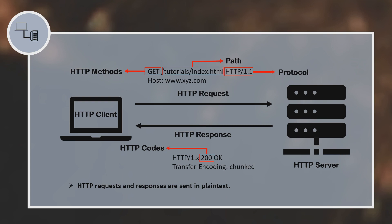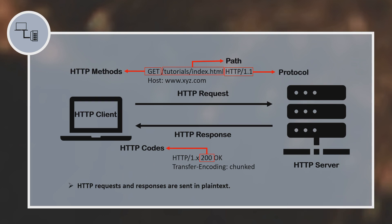The HTTP client sends a request to the server. The server processes it and sends back an HTTP response to the client. In the HTTP response, the server puts a status code, known as HTTP codes. It basically indicates the status of the request initiated by the client, which we will discuss in detail later. One important thing to know is that all the responses and requests sent in HTTP are in the form of plain text or clear text.